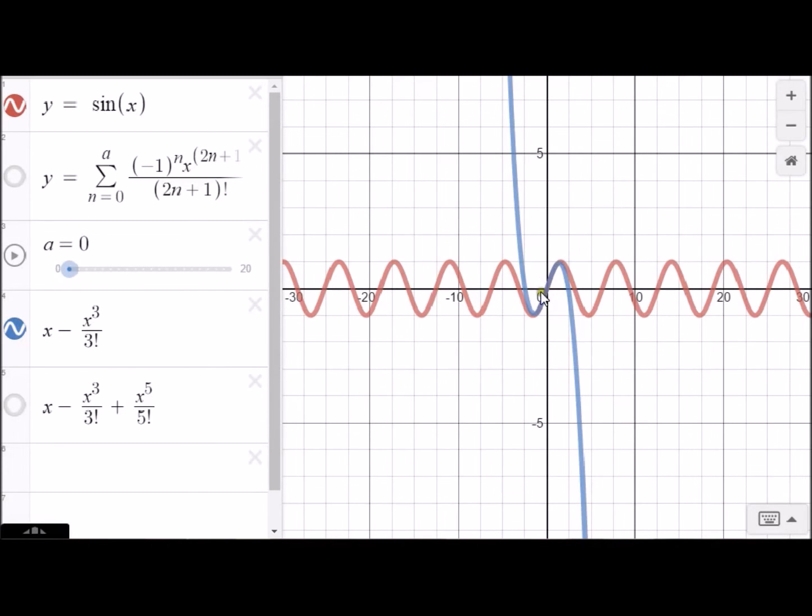It's hugging sine x for even longer. We said you could approximate sine x even better by using x minus x to the third over three factorial plus x to the fifth over five factorial. So there's that graph. That's even better. And again that's going to correspond from, so here we're going from n equals zero up to two. There's our zeroth term, our first term, and our second term.